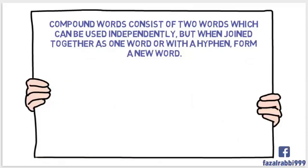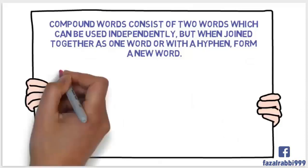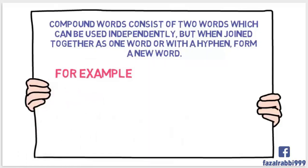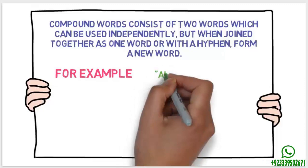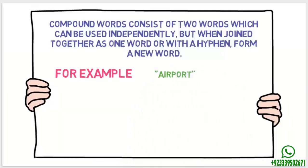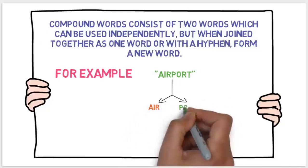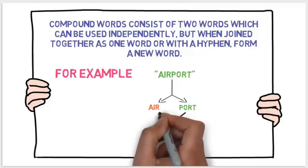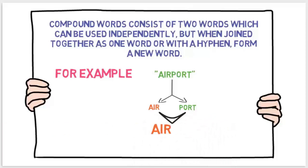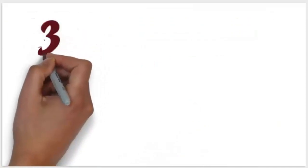a hyphen, it forms a new word. For example, we have the word 'airport,' which is the combination of two words, 'air' and 'port,' which join together and give us a new word 'airport,' which is a compound word.